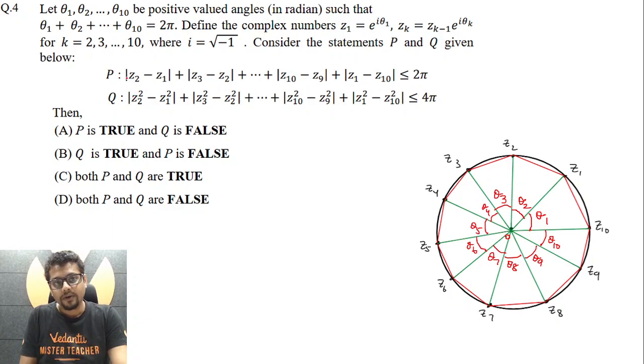Now coming to the statement P, what is mod Z2 minus Z1? It is essentially distance between these two points, which represents Z2 and Z1. Mod Z3 minus Z2, again, essentially is distance between these two points representing Z2 and Z3. Similarly, mod Z4 minus Z3 plus mod Z5 minus Z4 plus so and so forth plus mod Z9 minus Z8 plus mod Z10 minus Z9 plus mod Z1 minus Z10. So basically, the left hand side in the statement P is sum of the side lengths of this decagon, 10-sided polygon, which is not necessarily a regular decagon or regular polygon. So I can say for sure that this chord joining the points representing Z1 and Z2, the length of it will definitely be less than the length of arc on the circle joining the points representing Z1 and Z2.